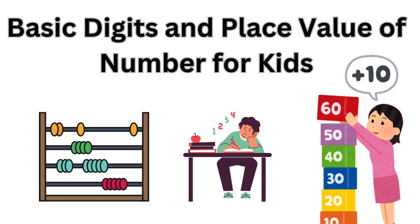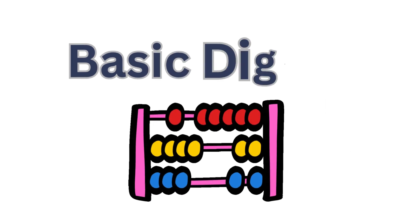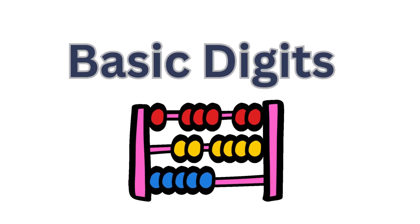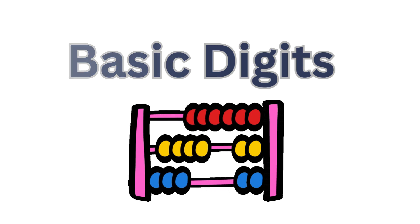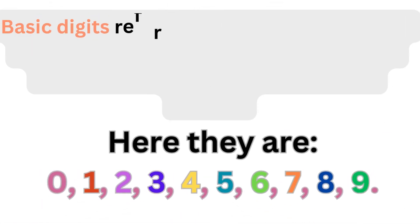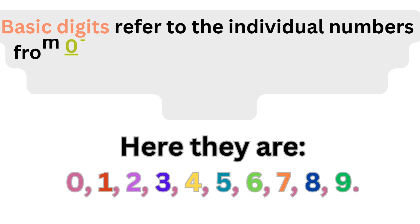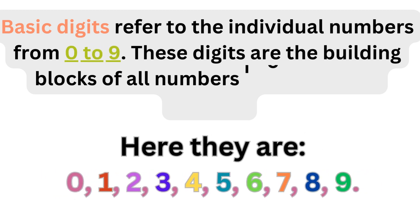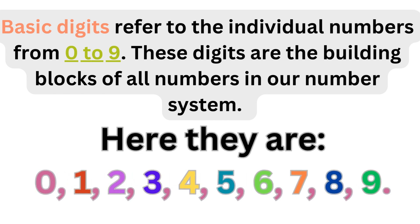Basic Digits and Place Value of Number for Kids. Let's break down the basics of digits for kids in a simple and easy-to-understand way. Basic digits refer to the individual numbers from 0 to 9. These digits are the building blocks of all numbers in our number system. Here they are.